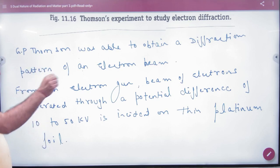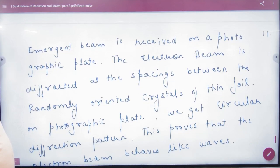And it was incident on a platinum foil. So the emergent beam is received on a photographic plate.